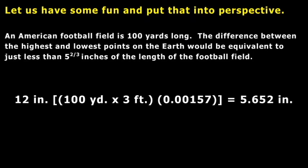And you can look at it another way. An American football field is 100 yards long. The distance between 100 yards is 300 feet, which is very roughly equivalent to 100 meters for you metric people, but it's actually not 100 meters. But, you know, whatever. The difference between the highest and lowest points on Earth would be equivalent to just less than five and two-thirds inches the length of the football field. So you're talking about a football field that's 300 feet long and the difference between the highest and lowest points on Earth wouldn't even be six inches of that 300 feet.